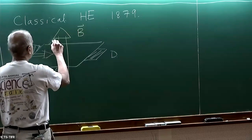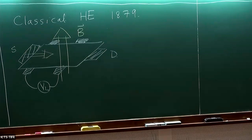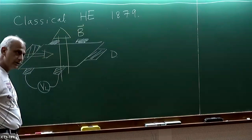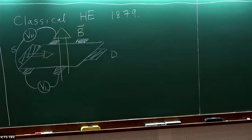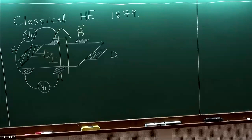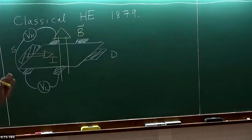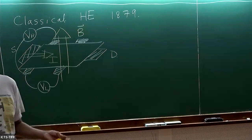There are contacts along each edge. There's a source S and a drain, plus contacts used to measure voltages. The voltage along one edge is the longitudinal voltage, which measures the normal resistance. Then there's the transverse or Hall voltage — the Hall voltage divided by the current is called the Hall resistance — and that is one of the quantities whose behavior is very surprising in the quantum Hall effect.